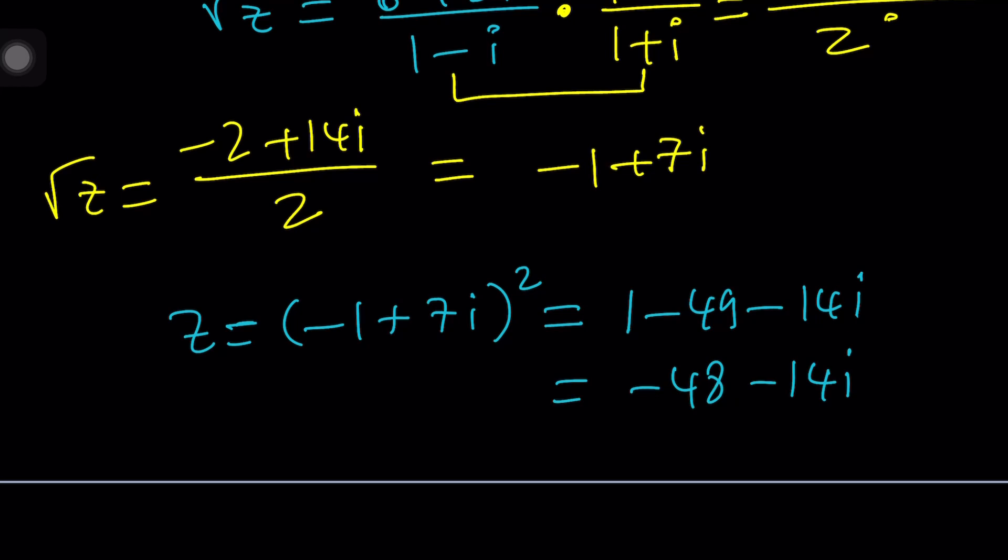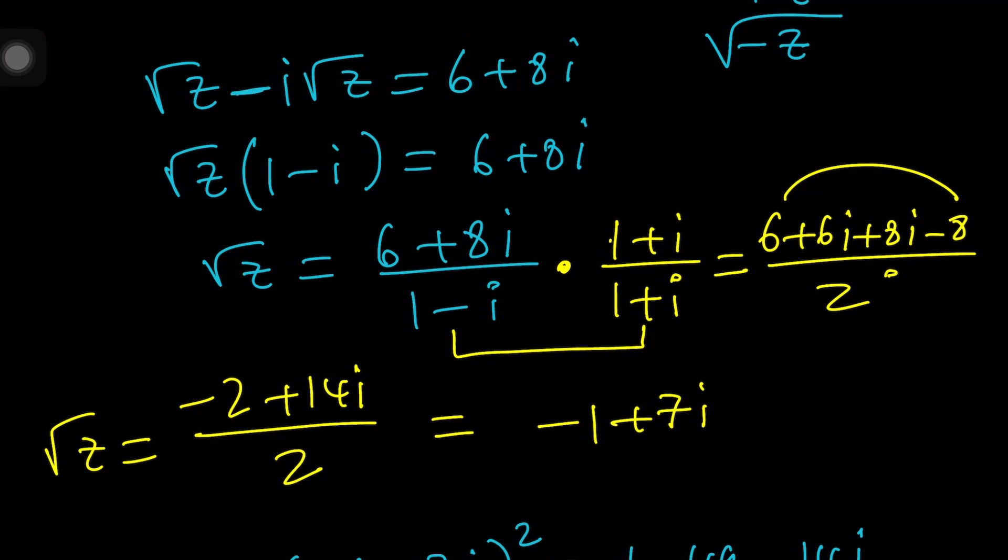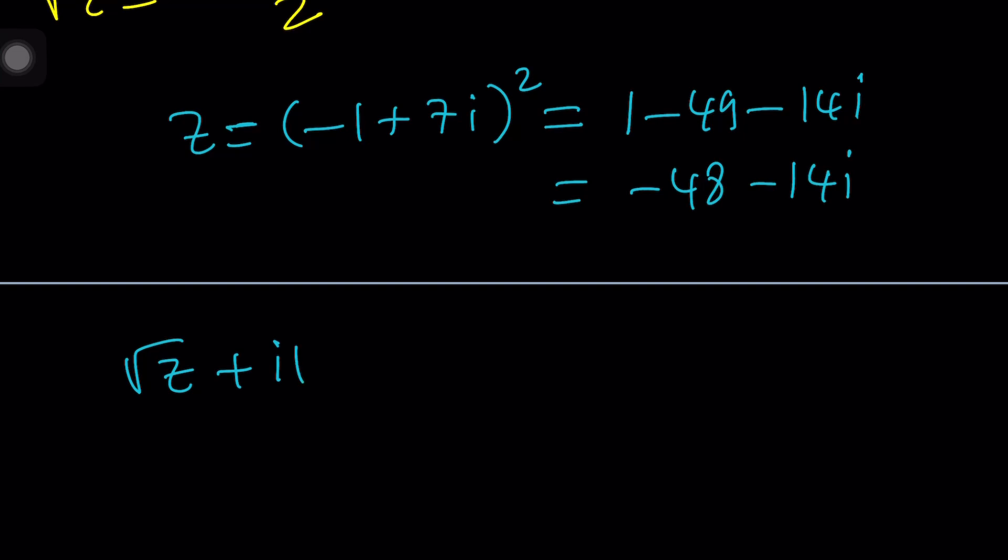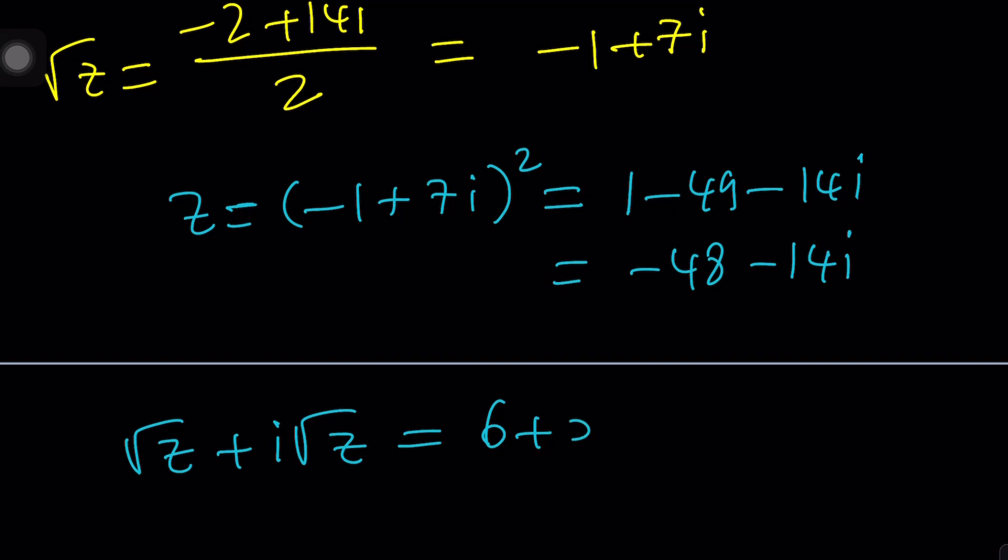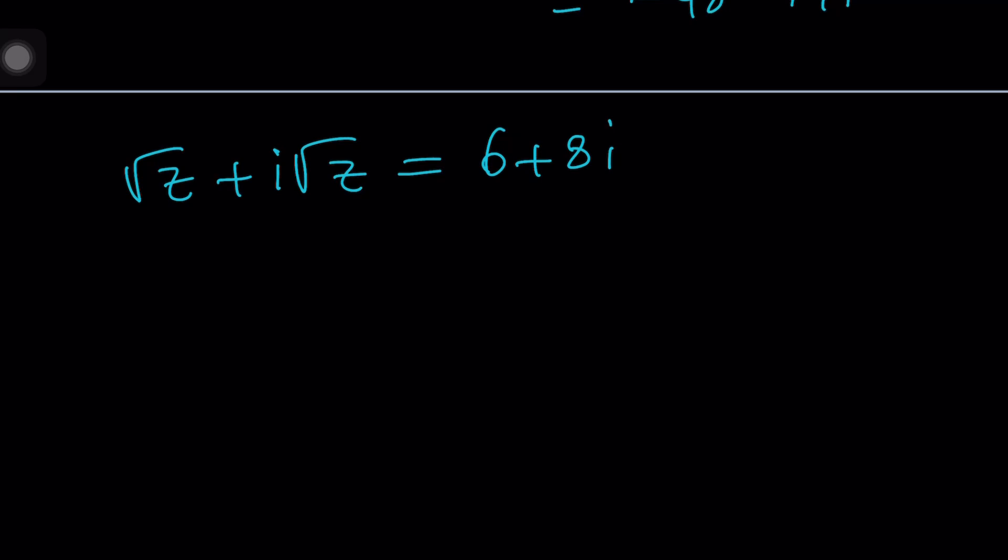Do you think we're going to get the same answer by using the other sign? Let's go ahead and find out. So this time we're going to use the plus sign. Root z plus i root z equals, what was the right-hand side? 6 plus 8i. By the way, 6 plus 8i is a special number. Because if you think about it, it comes from the 3, 4, 5 triangle. You got that? So its modulus is 10. Now we're going to do the same thing. Take out square root of z, factor, and divide, simplify, so on and so forth.